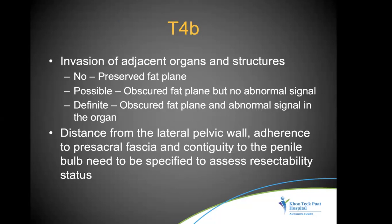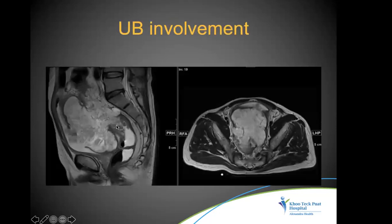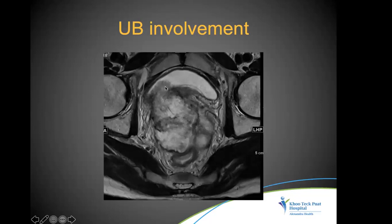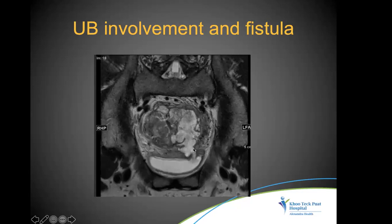T4b tumor involves invasion of adjacent organs — similar to other tumors in radiology: preserved fat plane means no invasion; obscured fat plane with no abnormal signal suggests possible invasion; definite invasion requires both obscured fat plane and abnormal signal within the organ. We should also report distance from the lateral pelvic wall, adherence to the presacral fascia, and contiguity with the penile bulb, particularly when pelvic exenteration is planned. A mucinous tumor invading the bladder, a recto-vesical fistula (T2-bright track from tumor into the bladder), are examples of T4b.